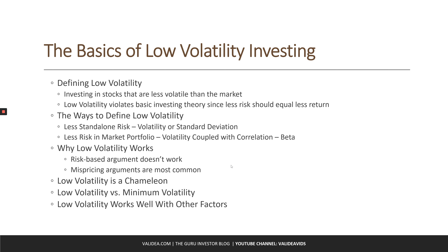There are two major ways investors can identify low volatility stocks. The first is standard deviation. Standard deviation looks at the volatility of a stock on its own. If a stock has significant fluctuations in its price over time, it will have a high standard deviation.